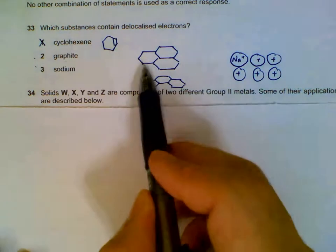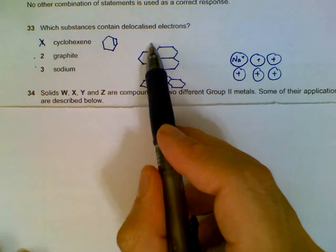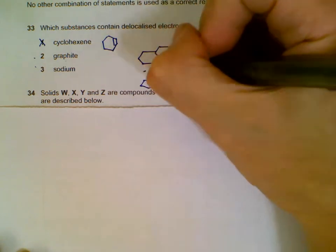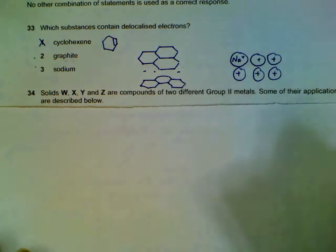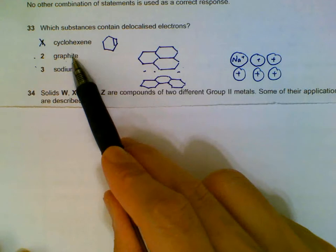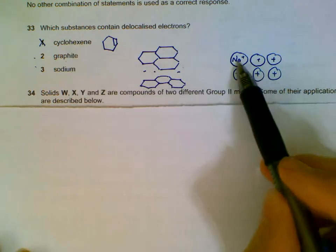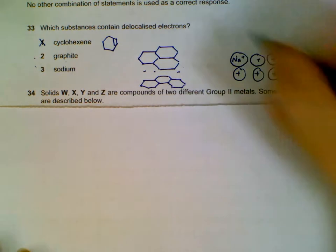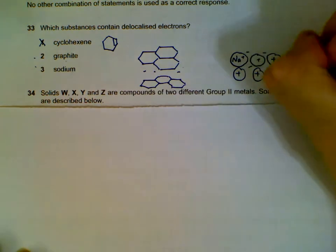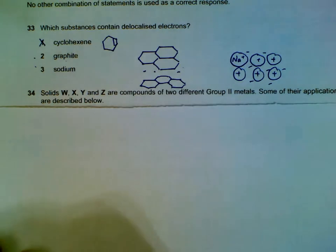Graphite: if you recall the structure, it's actually hexagonal sheets of flat hexagonal, and then there will be mobile electrons among the layers or between the layers. Graphite conducts electricity because of that. Sodium: sodium metal has positive ions surrounded by sea of delocalized electrons, so sodium metal is also correct.